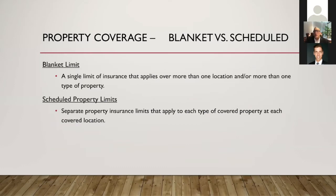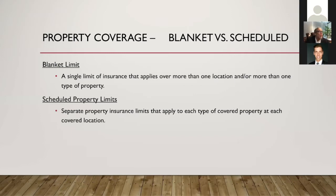Blanket limits used to be something we always got, and it's important if you're a multi-building association rather than a high-rise. We have mid-rises that come in threes, fours, and fives, and average garden-style associations. We used to apply a blanket limit that allowed any value to move from any building to any other building in the event of mistakes or one building having more intrinsic value than originally scheduled. Today, carriers won't do that for us anymore.